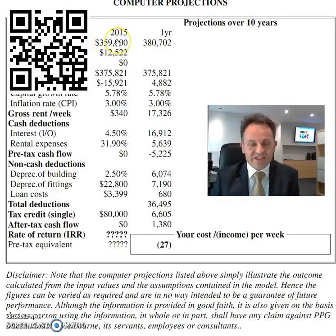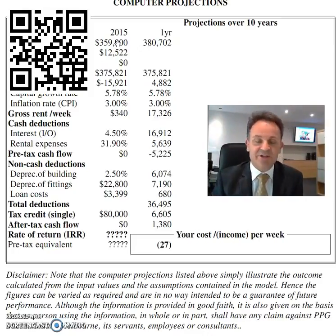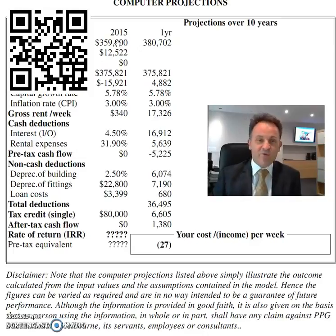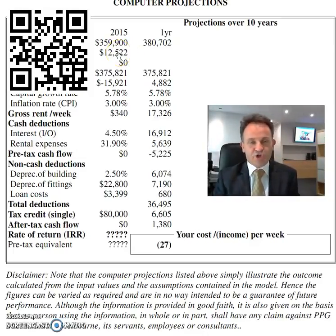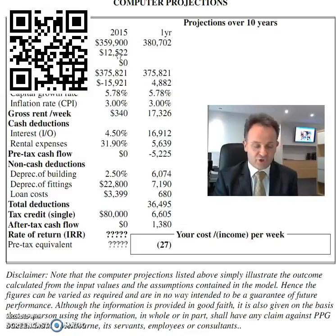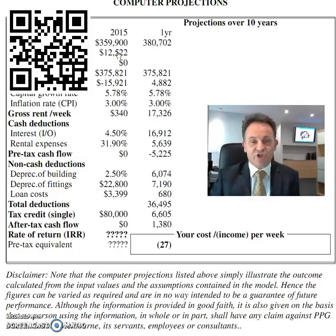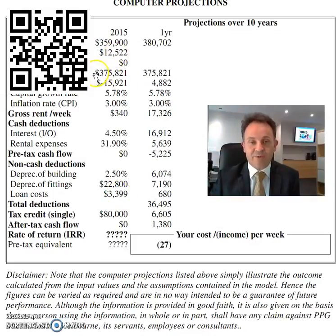The property value is around $359,000 — that's the average price you're going to be paying for those townhouses in Blue Skies in Queensland. Then we've got purchase costs, which consist of your stamp duties, your loan costs, and conveyancing. So the total amount comes to $359k plus about $12k.